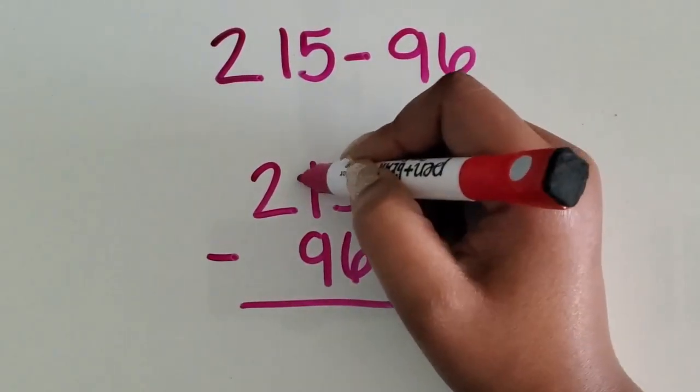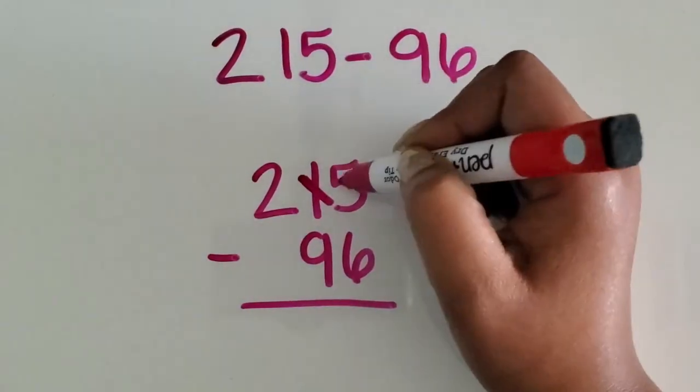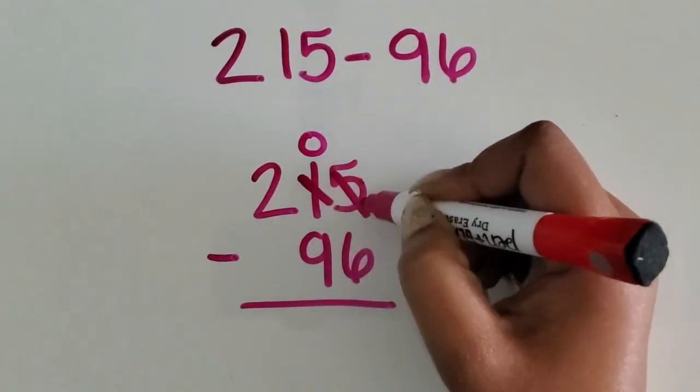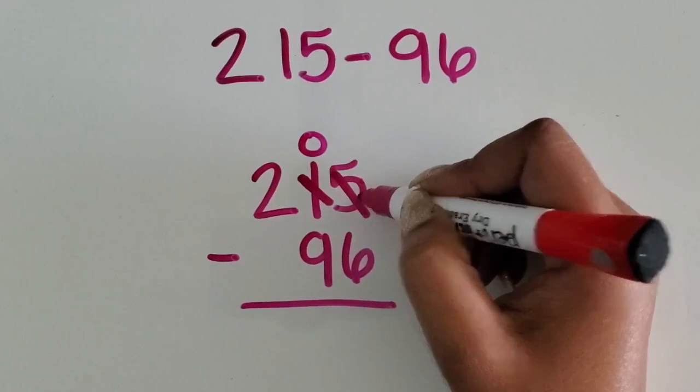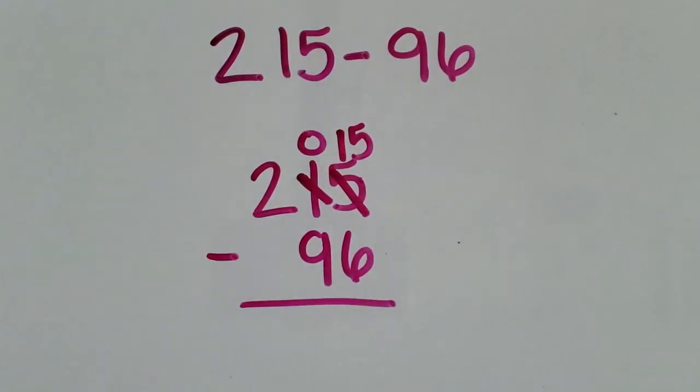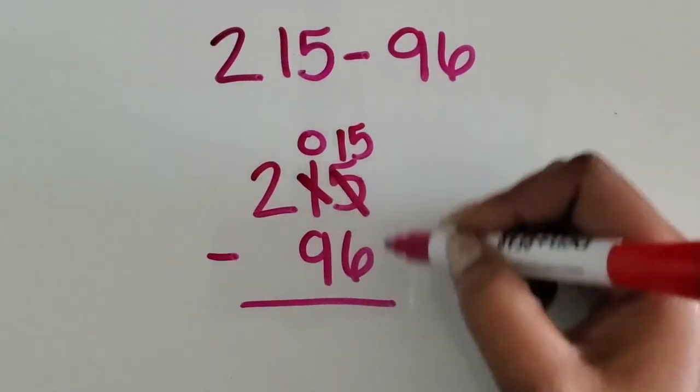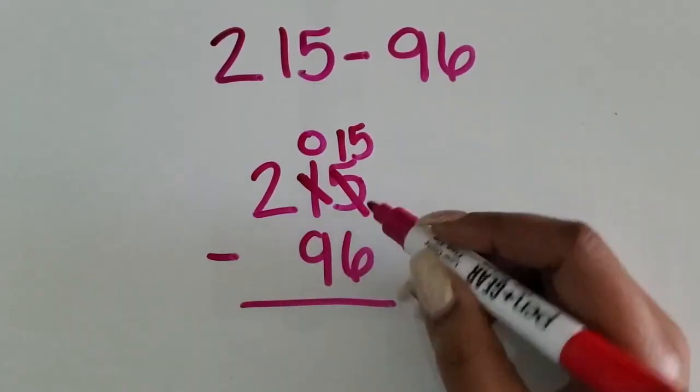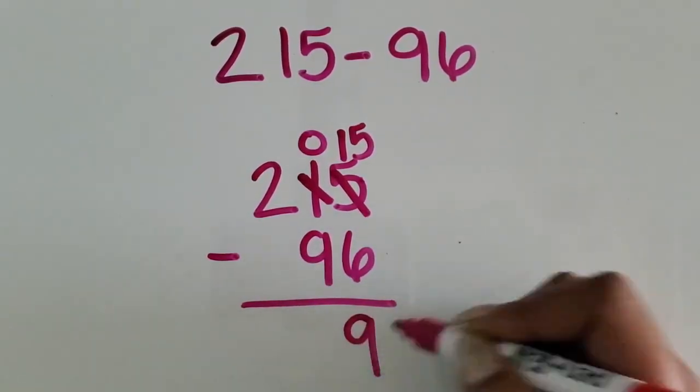So I'm going to regroup the ten, and that will leave me with zero tens. I want to take that ten and regroup it for ten ones. I have ten more than five, which is 15. Now I have enough ones to take six away. So 15 minus six ones is nine ones.